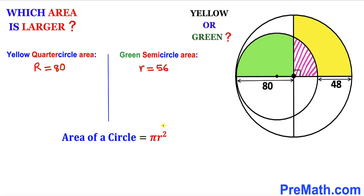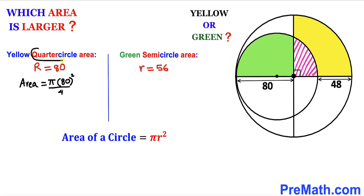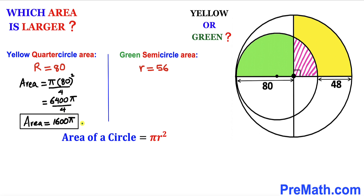Let's recall the area of a circle formula: area equals π r squared. Let's calculate the yellow quarter circle area first. The area equals π times 80 squared, divided by 4 since we are dealing with a quarter circle. Simplifying: that is 6400π divided by 4, which gives us 1600π. So the area of this yellow quarter circle is 1600π.